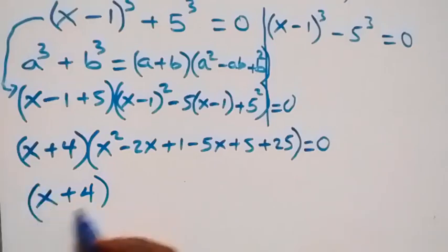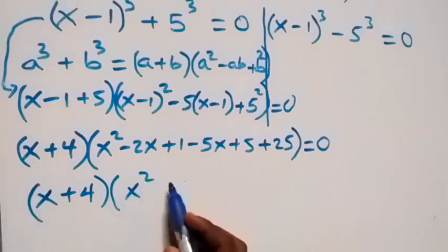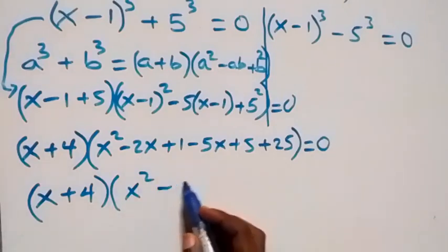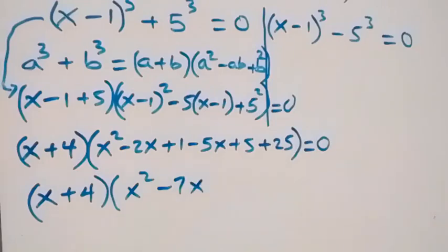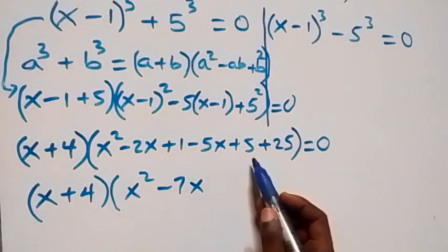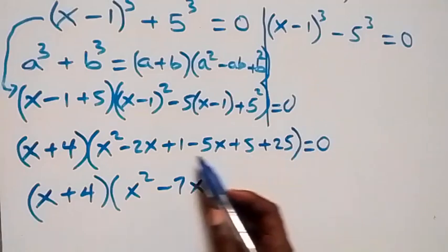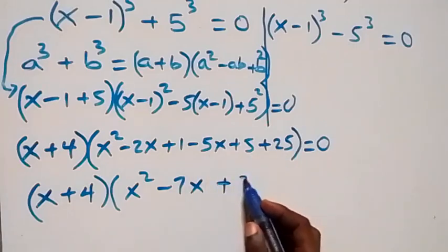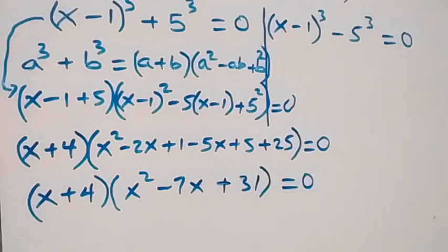Inside the bracket, combining like terms: x squared, then minus 2x minus 5x gives minus 7x, then 1 plus 5 plus 25 gives plus 31, equals to 0.